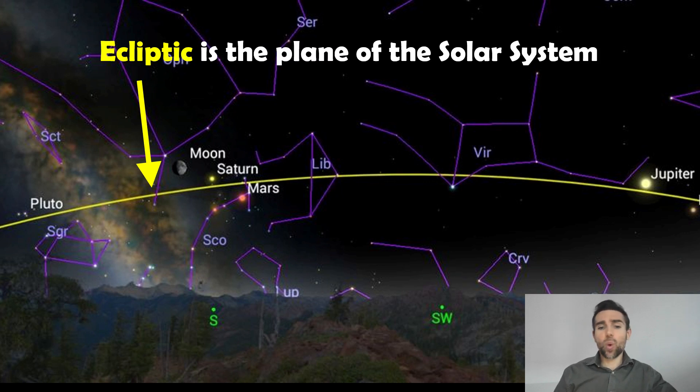So the ecliptic is quite useful. If we look out into the night sky, it is going to be the orbital plane of the solar system. So things like the planets and the Sun will move along the ecliptic.